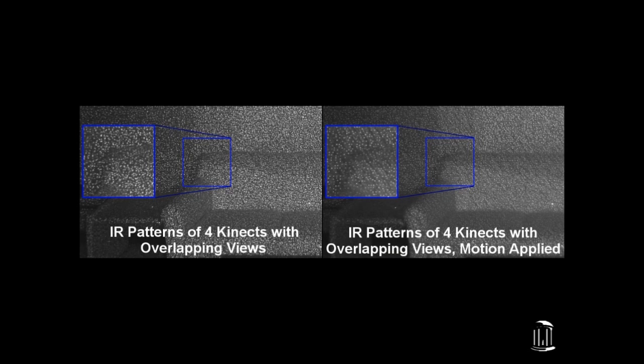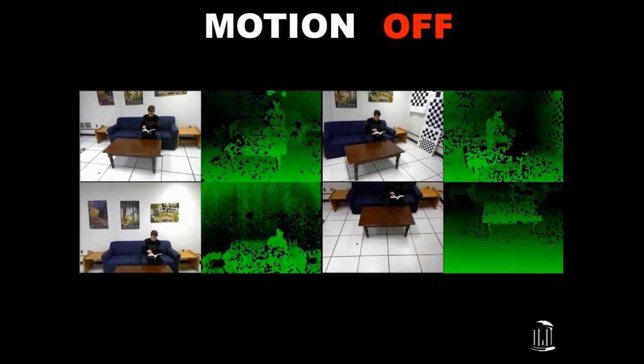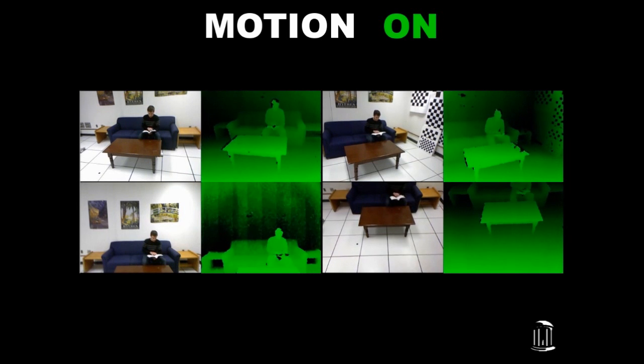Blurring of the high spatial frequency pattern results in a significant loss in contrast. This lets other devices disambiguate their own patterns.